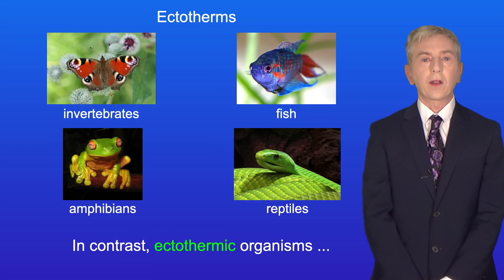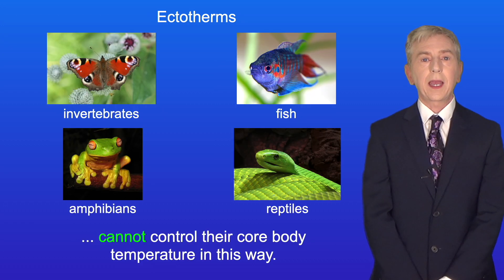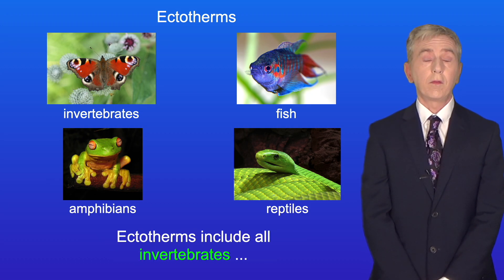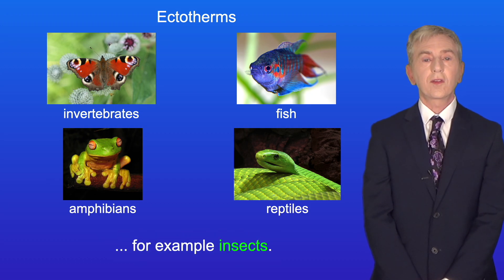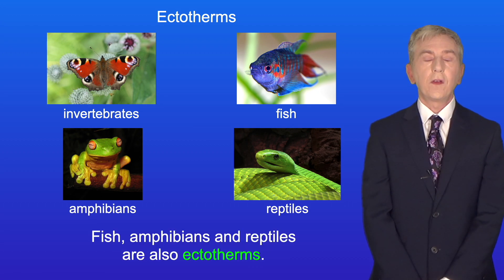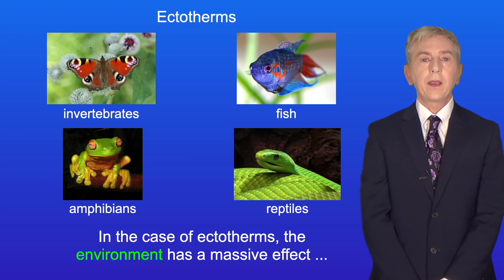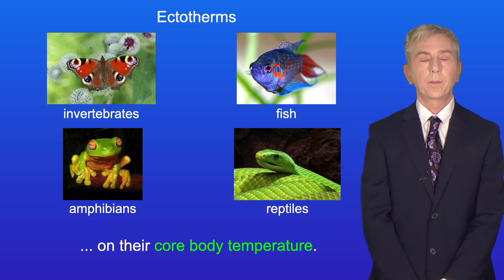In contrast, ectothermic organisms cannot control their core body temperature in this way. Ectotherms include all invertebrates, for example insects. Fish, amphibians and reptiles are also ectotherms. In the case of ectotherms, the environment has a massive effect on their core body temperature.